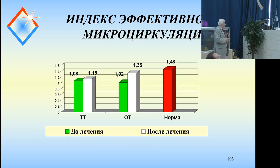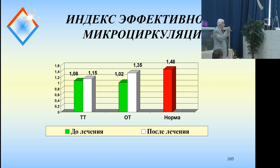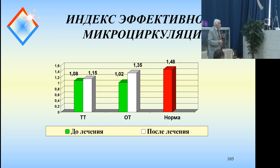The index of efficiency of soft (microvascular) circulation — as I just discussed, this concerns the direct penetration of the erythrocyte into the capillary bed. Here everything normalizes well with ozone therapy.